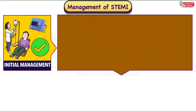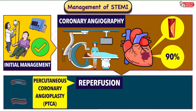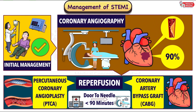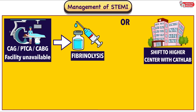After initial management of STEMI, patients should be taken for early coronary angiography to locate the extent and location of block, and then for definitive reperfusion therapy, which includes percutaneous coronary intervention or CABG — coronary artery bypass graft — depending on suitability. The outcome is very good if door-to-needle time is less than 90 minutes, but it can be done within 12 hours depending upon signs and symptoms. If coronary angiography, PTCA, or CABG is not available, the patient should be shifted to a tertiary care centre with a CATLAB facility in a cardiac ambulance.